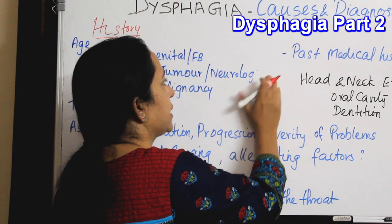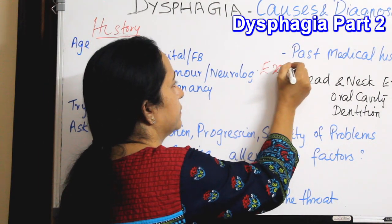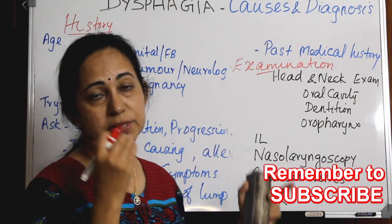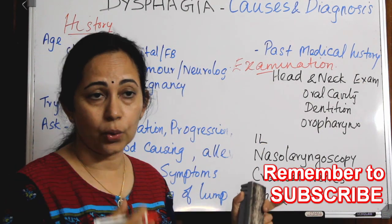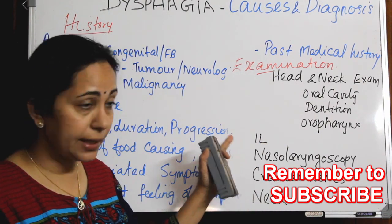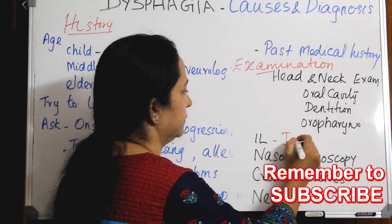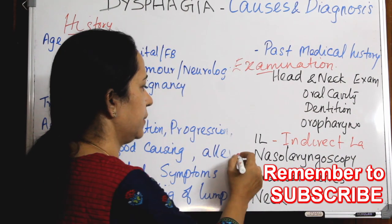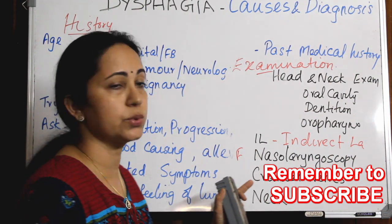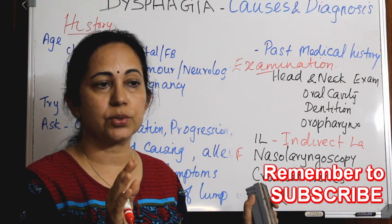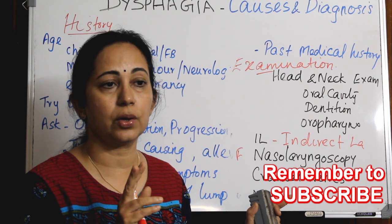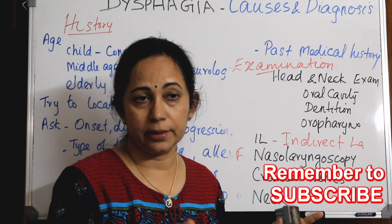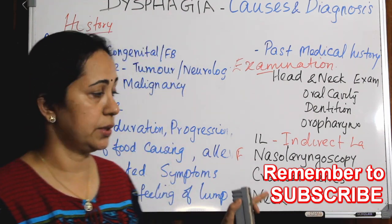Next comes a thorough examination of the head and neck, especially the oral cavity, the dentition, and the oropharynx. Indirect laryngoscopy or flexible naso-laryngoscopy can be used to examine all areas of the pharynx and larynx, including the movement of the vocal cords. Especially look for pooling of saliva anywhere — either in the vallecula or in the piriform fossa. That is very important.